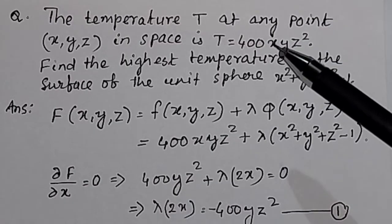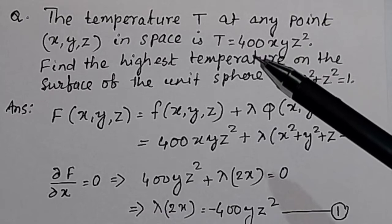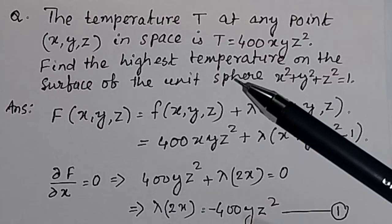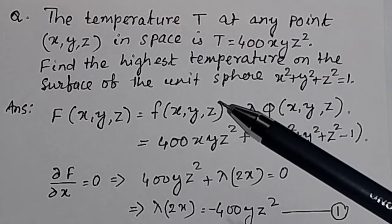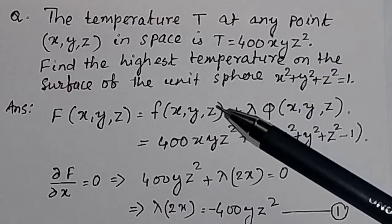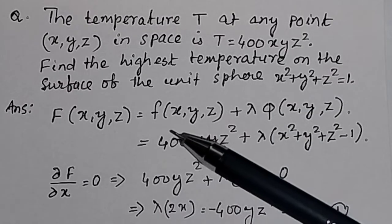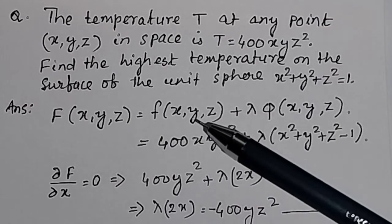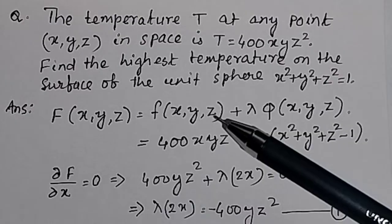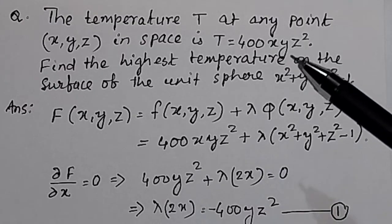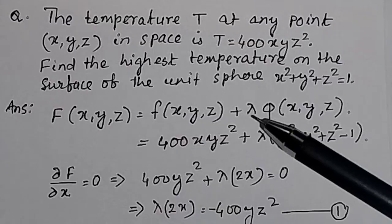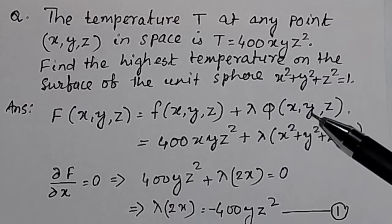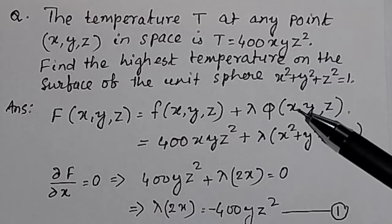We have to find out the temperature at any point in space. This can be solved by using constrained maximization using the Lagrange multiplier. In the Lagrange multiplier method, any function can be represented by f(x,y,z), which is the objective function — that is T = 400xyz² — plus lambda, where lambda is the Lagrange multiplier, and φ(x,y,z) is the constraint or condition.